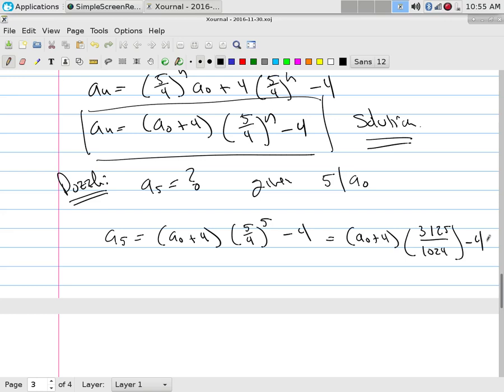Now here's my question: a_5 is an integer. If a_5 is an integer and I'm dividing this side by 1024, what does that tell you about that number to be able to get an integer? It has to be a multiple of 1024.